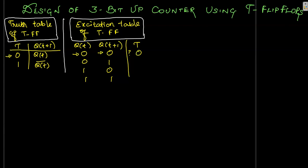If 0 is changing to 1, we want to change the previous state, so we need to give 1 as input to complement the previous state. Thus the excitation table of the T flip-flop is created. After understanding the truth table and excitation table, let us start our design of the 3-bit up-counter.